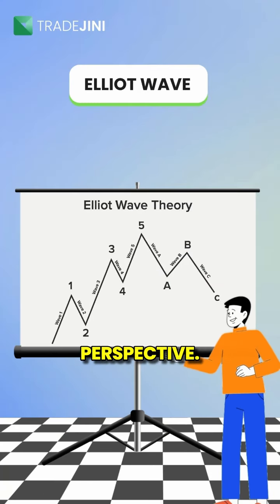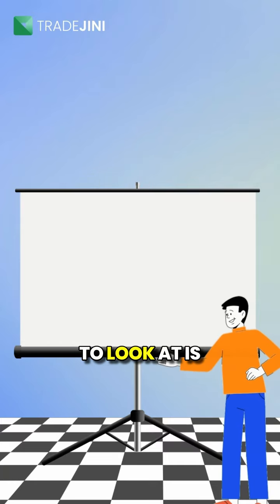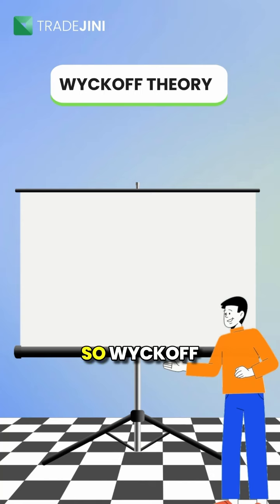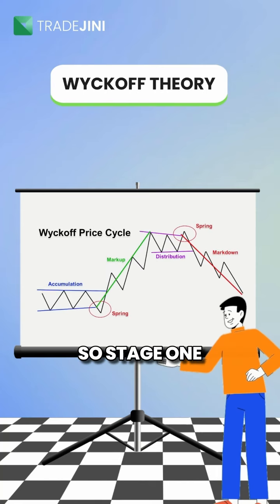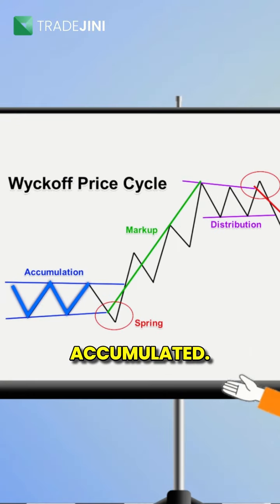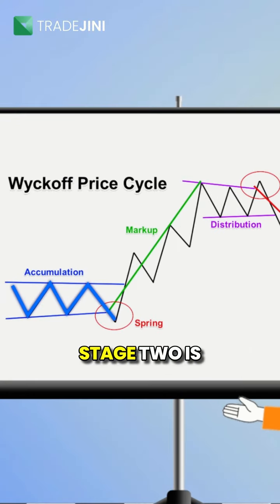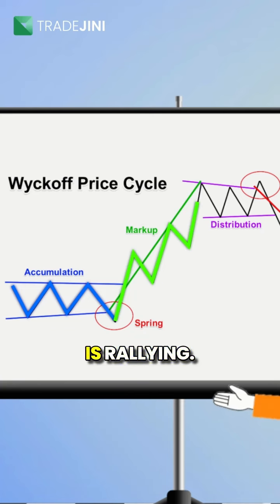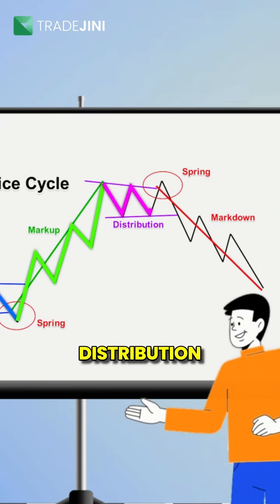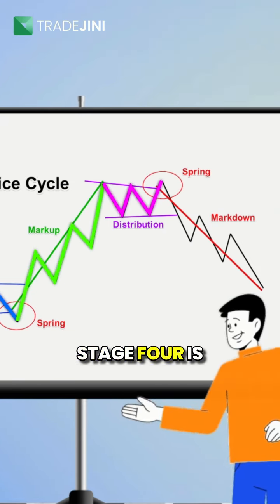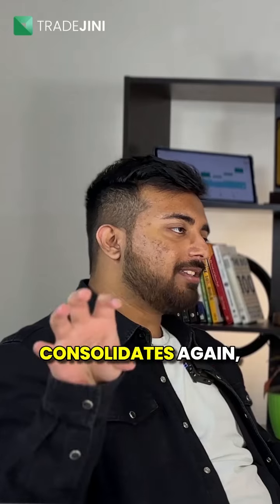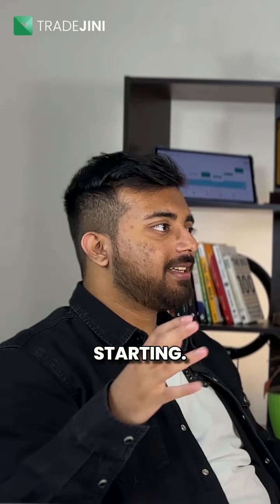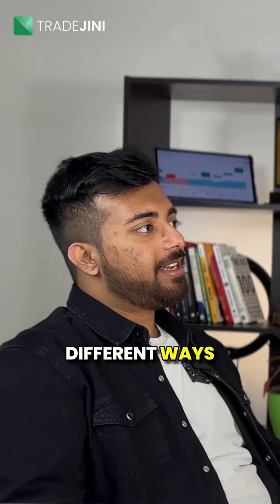Another perspective is Wyckoff Theory, which says there are stages in the market: stage one is where the stock is getting accumulated, stage two is where the stock is rallying, stage three is where distribution is happening, and stage four is where the market is being sold off. If it then consolidates, stage one is starting again. These are different ways you can look at trends in the market.